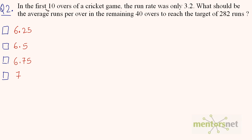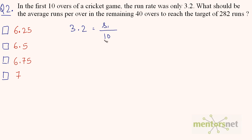The average runs for the first 10 overs is 3.2. So 3.2 equals the sum of runs for the first 10 overs — let's call it S1 — divided by the number of overs, which is 10. Therefore, S1 equals 3.2 times 10, which is 32.